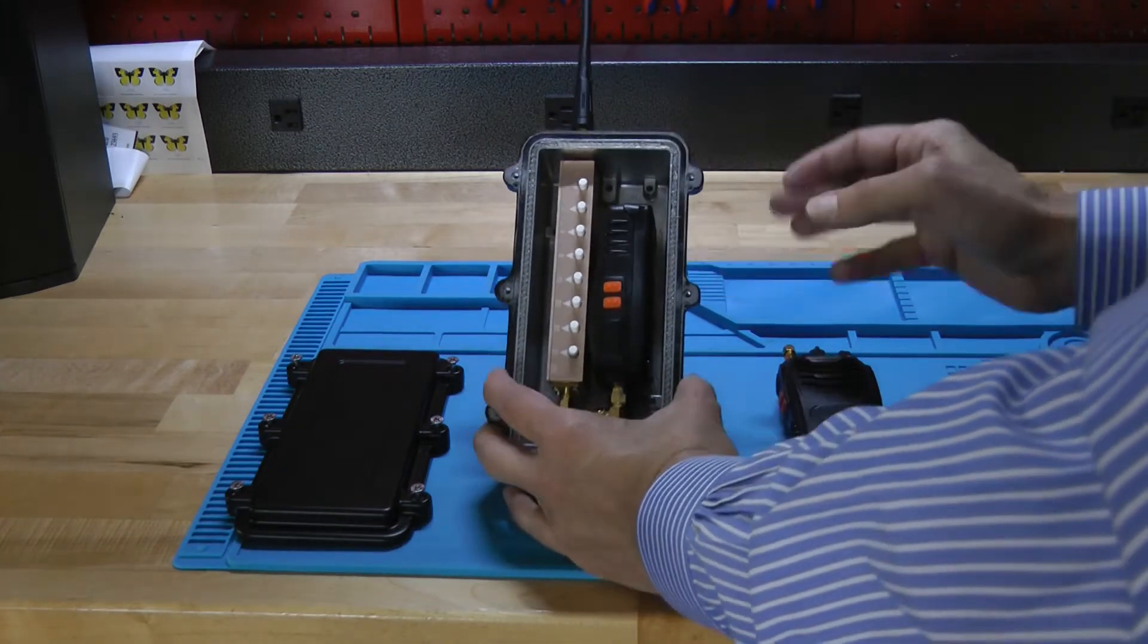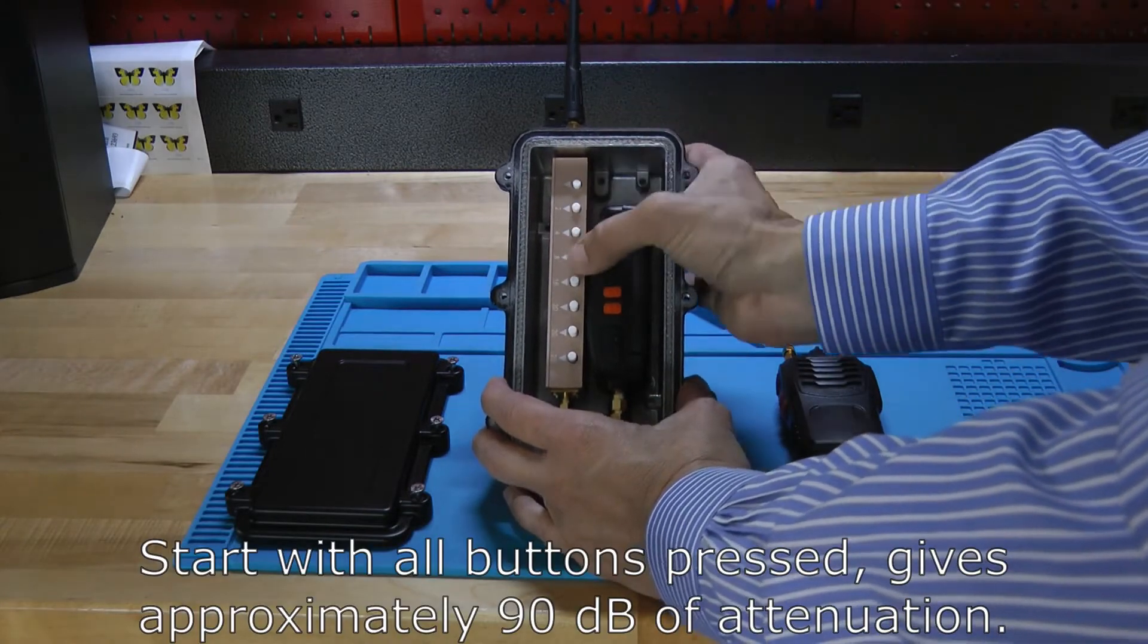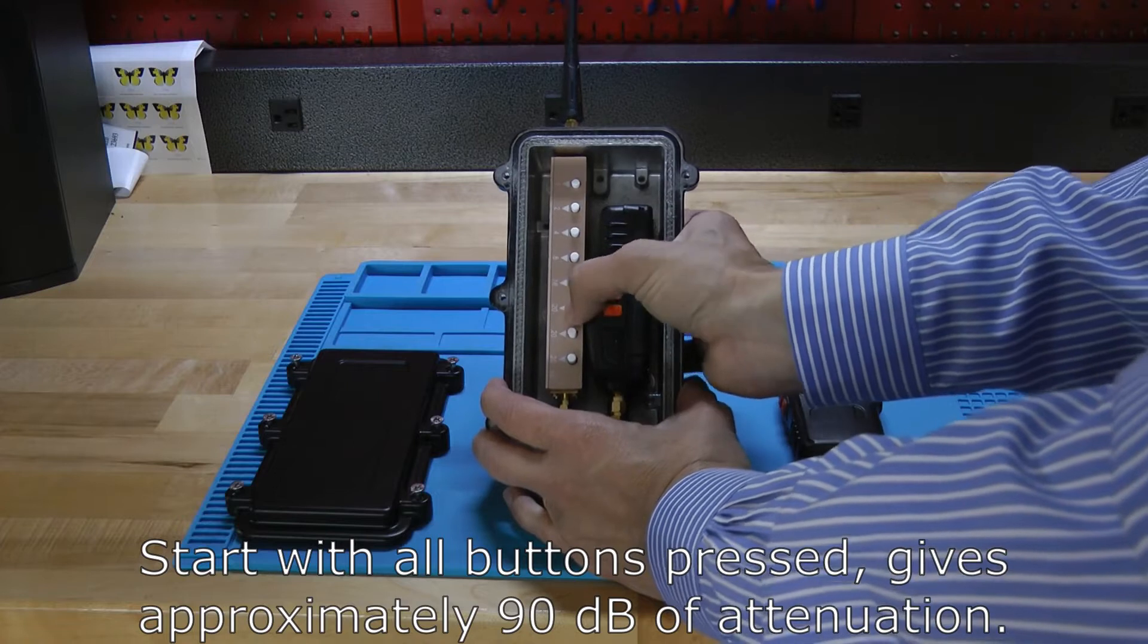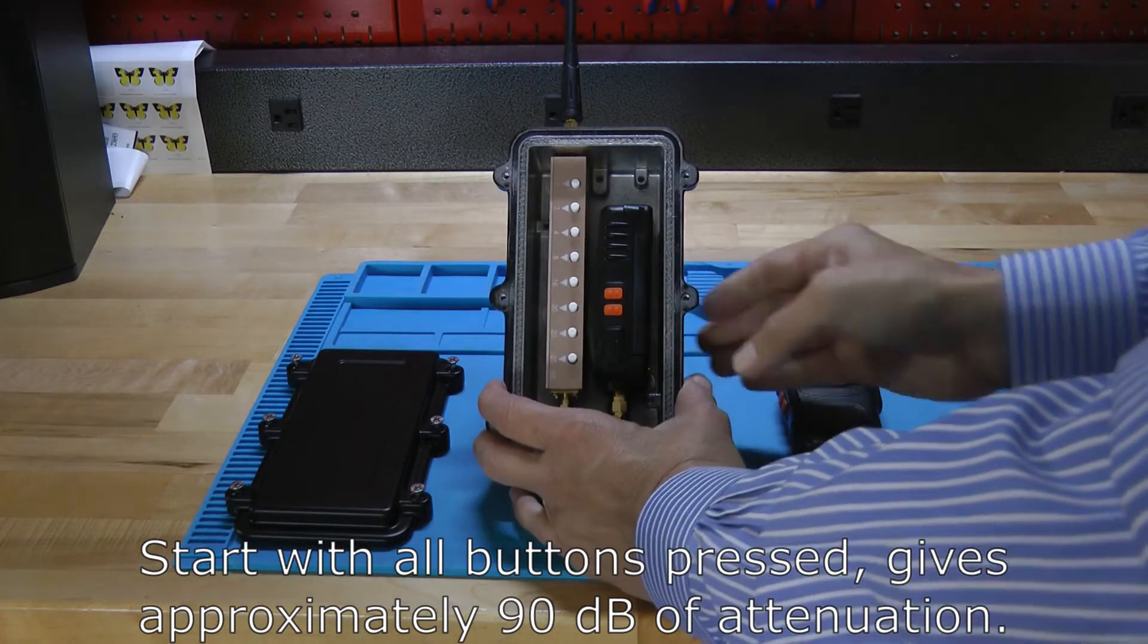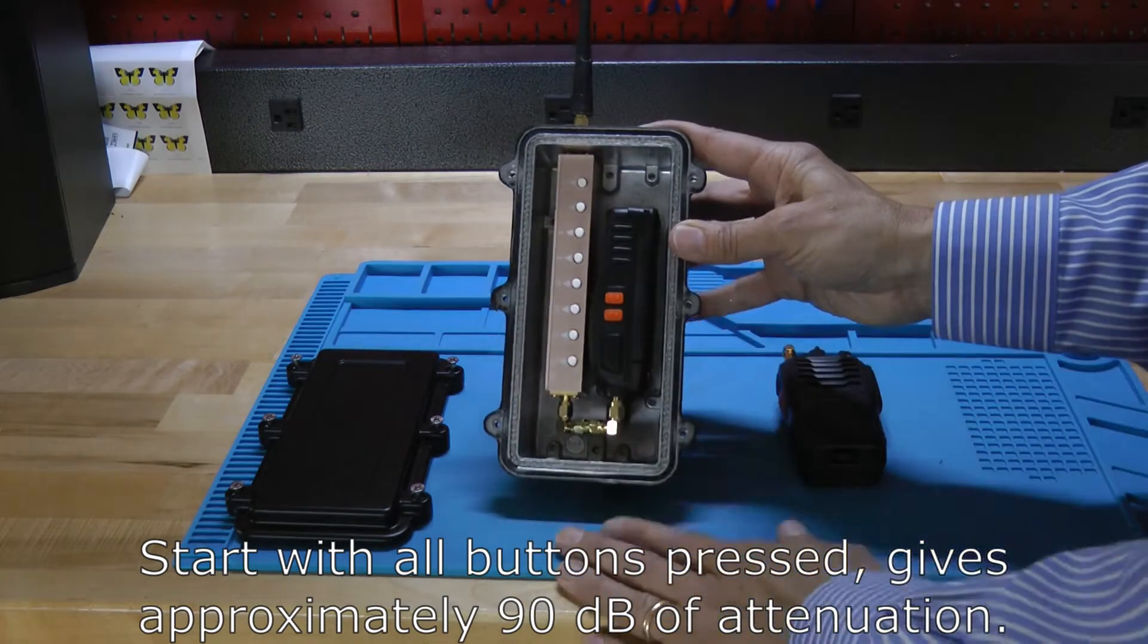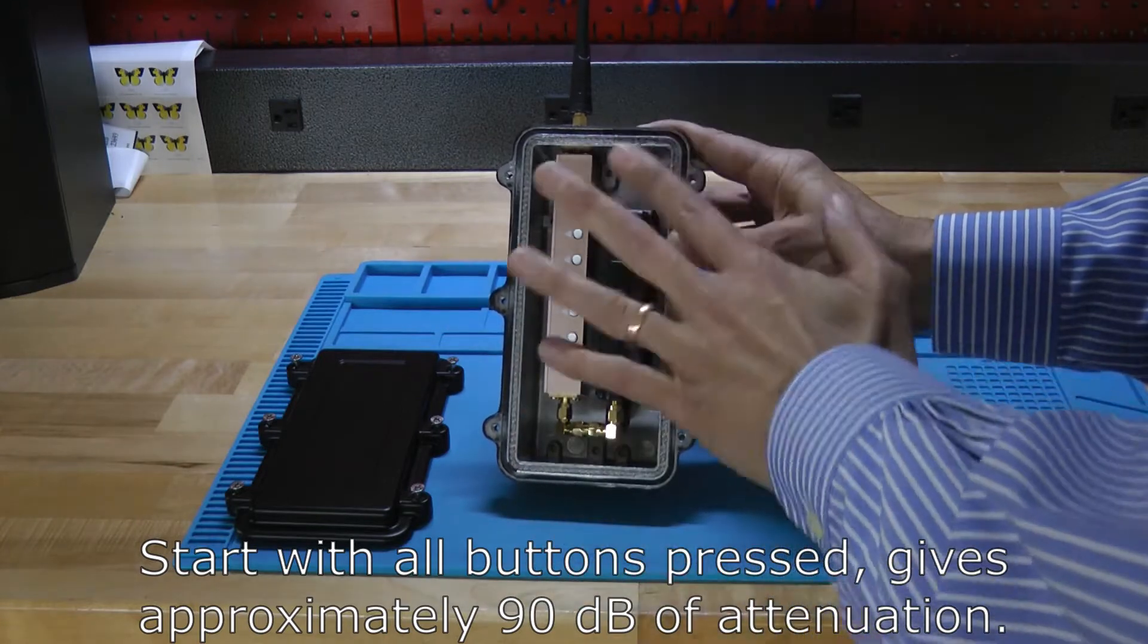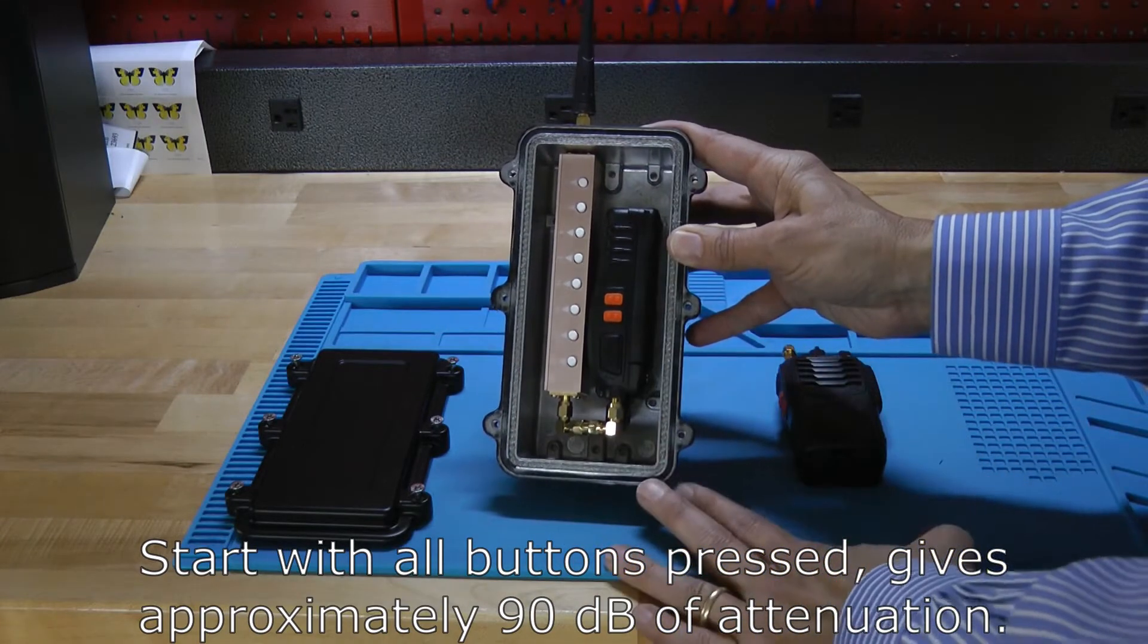The way that it works is we're going to start with all of the attenuator buttons pressed. Now, sometimes they're a little sticky when you first get them so you have to press them a little bit hard to get them to go in, but if you press them they should all stay in. That's the way we start off, with all of the buttons pressed. It adds up to 91 dB but we'll just call it 90 dB to make it a little easier to talk about.